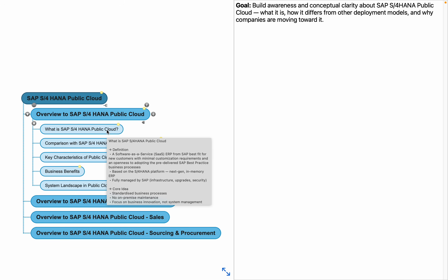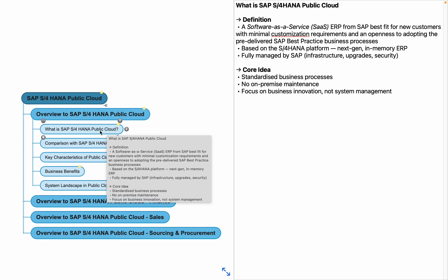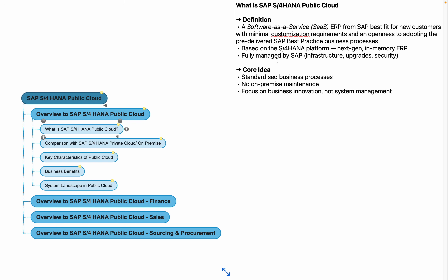SAP S4HANA public cloud is a Software as a Service ERP from SAP, and it is best fit for new customers with minimal customization requirements. This is something very important — if you have already worked on SAP S4HANA on-premise or private cloud, you know that in those cases SAP provides full control on customizations.